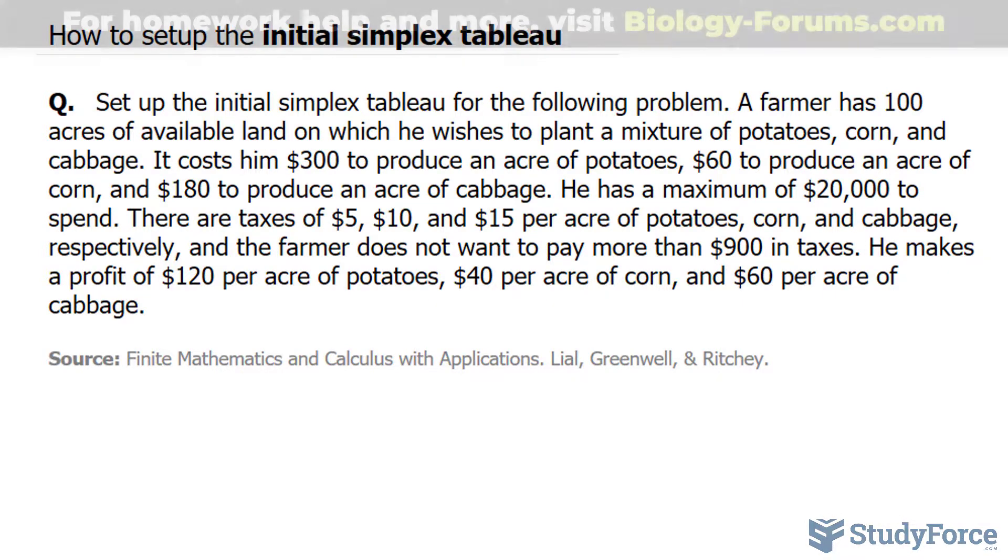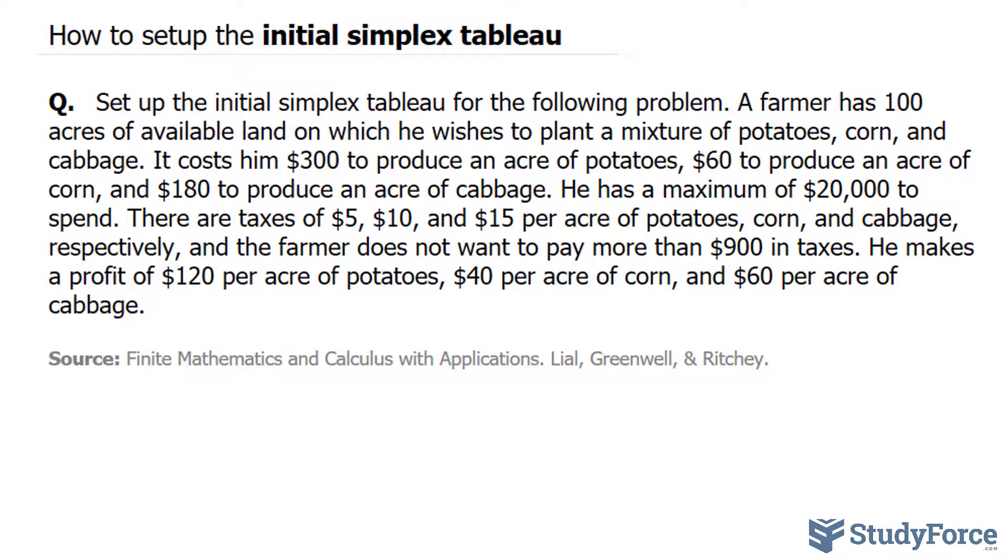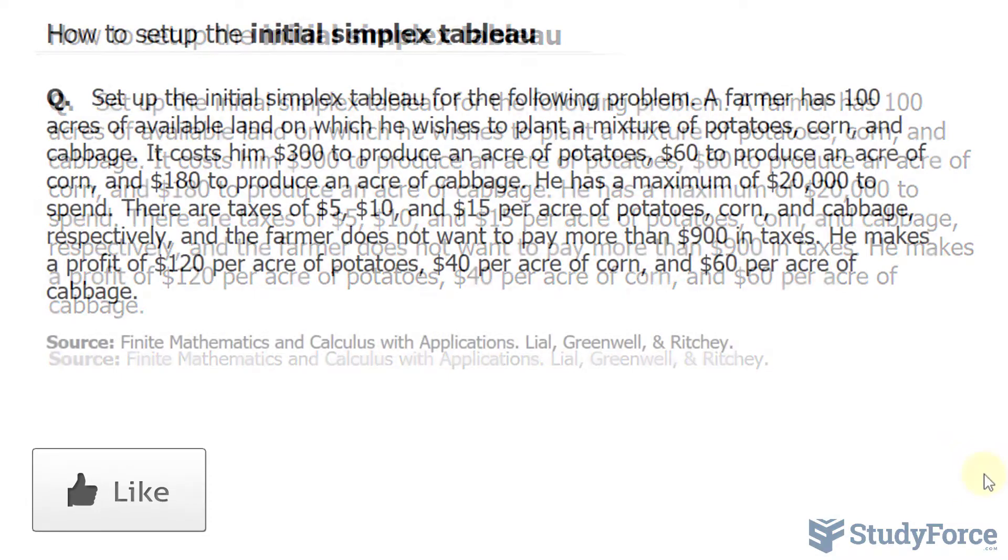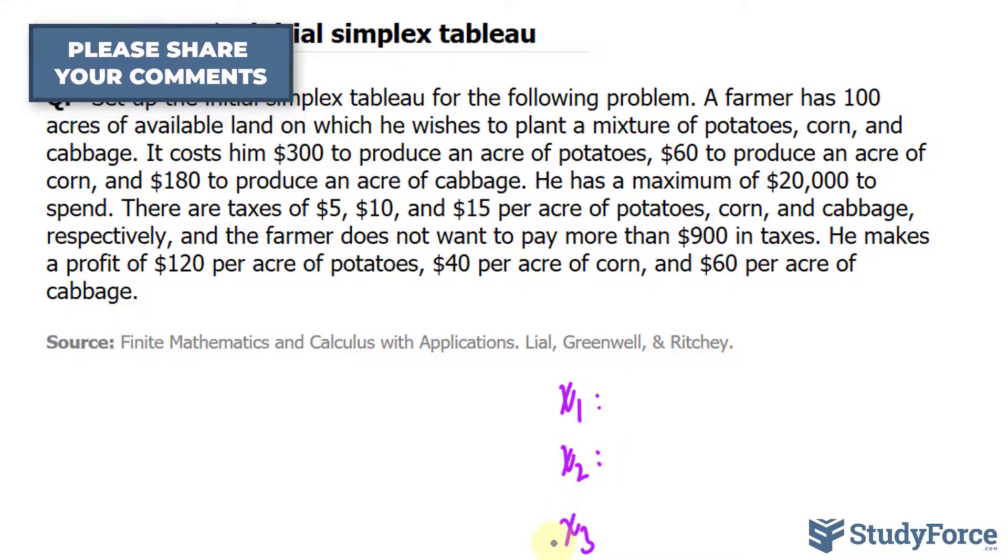As you can see, there's a lot of information provided here. And using this information, you have to come up with constraints, and you have to come up with the objective formula. The objective function will be used to maximize or come up with the answer for the maximum profit. So the first thing I want to do is assign letters for the acres of potatoes, corn, and cabbage. For that I'll use x sub 1, x sub 2, and x sub 3, where this represents the number of acres for potatoes, this represents the number of acres for corn, and this one for cabbage.